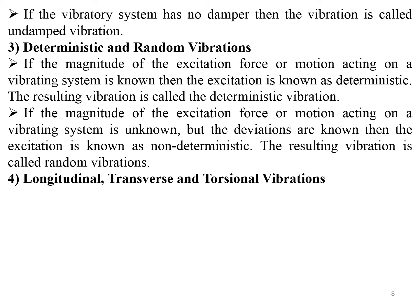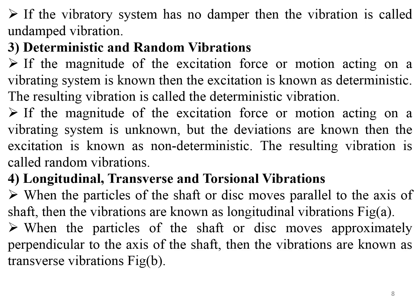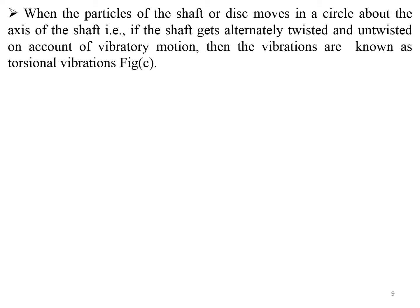Longitudinal, transverse, and torsional vibrations: when the particles of the shaft or disc move parallel to the axis of the shaft, these are longitudinal vibrations. When the particles move approximately perpendicular to the axis of the shaft, these are transverse vibrations. When the particles move in a circular path about the axis of the shaft — the shaft gets alternately twisted and untwisted — these are called torsional vibrations.